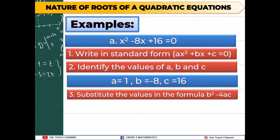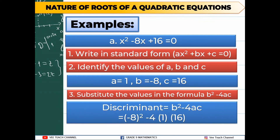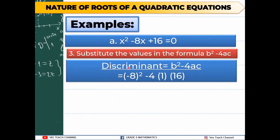Substitute the values in the formula b squared minus 4ac. So b is negative 8 squared, minus 4, times a which is 1, times c which is 16. We have now substituted all the values of a, b, and c. Now let's simplify, starting with the squared term.